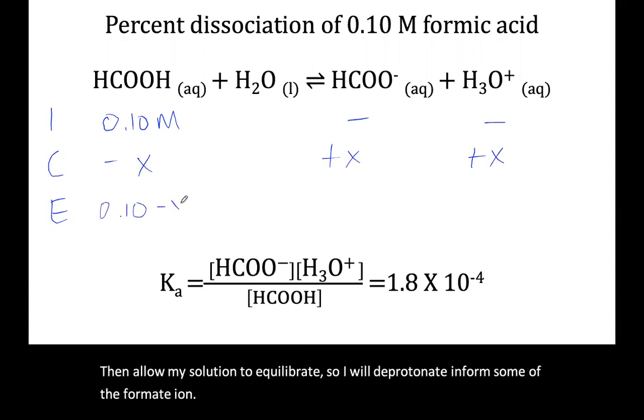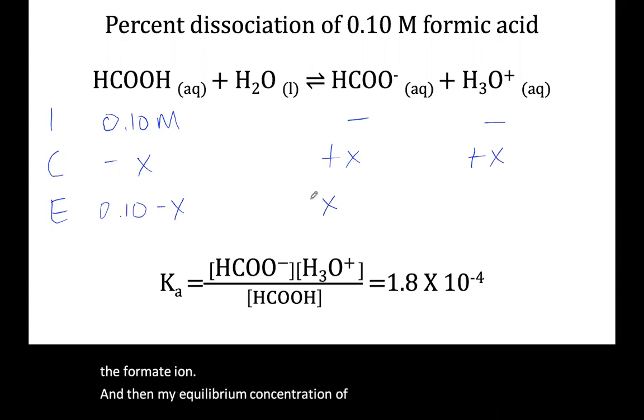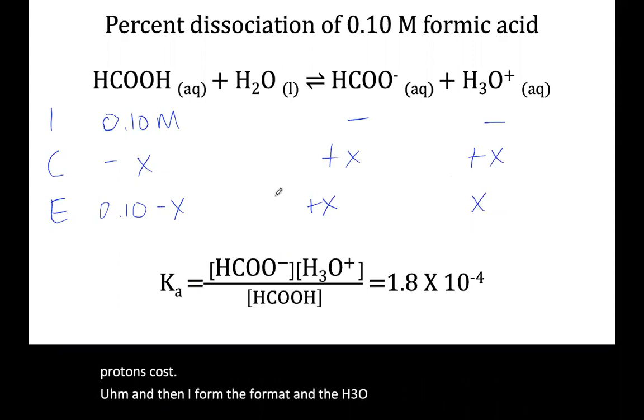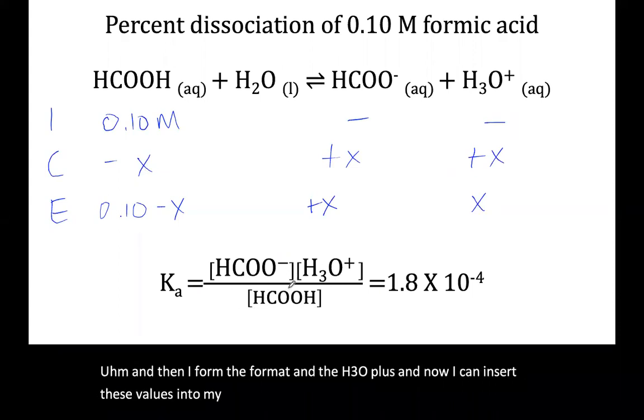So I will deprotonate and form some of the formate ion. And then my equilibrium concentration of formic acid will then have some protons lost. And then I form the formate and the H3O+. And now I can insert these values into my Ka equation, where my only variable is x, and then I'm able to solve for x.